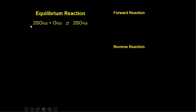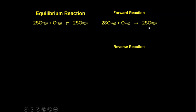We have an equilibrium reaction here: SO2 plus O2 in equilibrium, meaning forward reaction and reverse reaction are both happening, turning into SO3. The forward reaction reads left to right — SO2 plus O2 turns into SO3. But the reverse reaction treats the products as reactants: SO3 turning into SO2 plus O2.